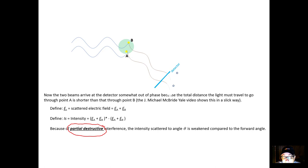If the particles were tiny compared to the wavelength of light, that phase difference wouldn't happen. If the light wavelength is much larger than the particle, when you rotate the detector, the two path lengths are essentially the same, so there's no destructive interference effect.